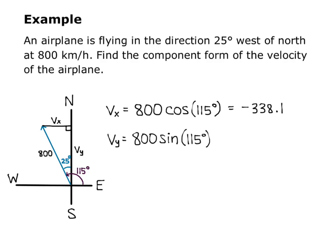So for v sub x, I get negative 338.1, and that's approximate. And for v sub y, I get 725.0. Just make sure that your mode is set to degrees in your calculator.